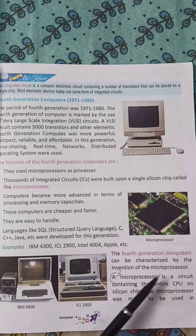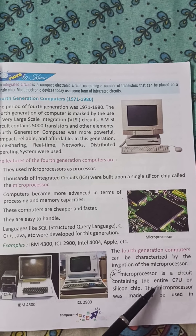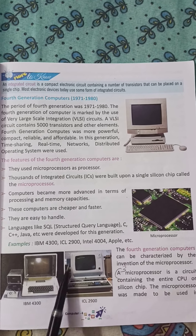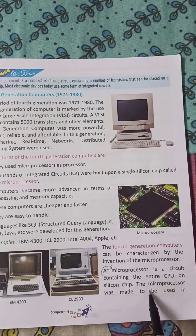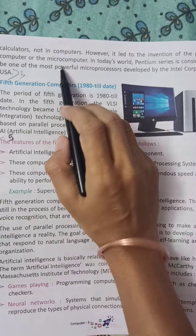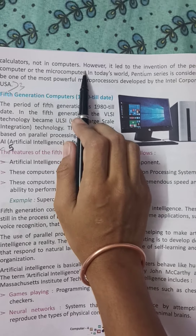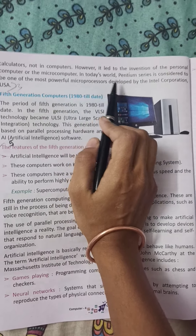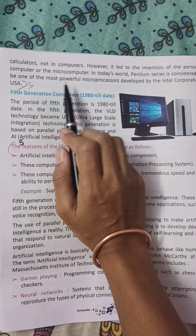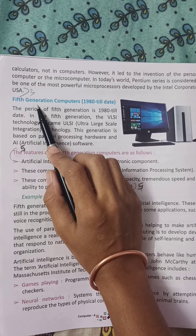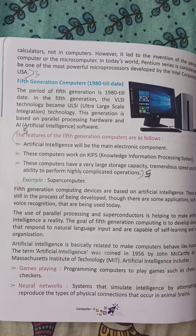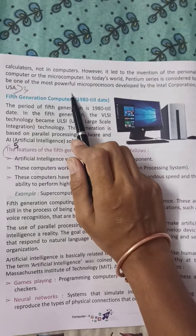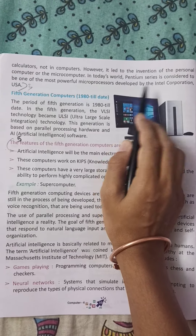The 4th generation computer was invented around the microprocessor. A microprocessor is a circuit containing the entire CPU on a silicon chip. Microprocessors were originally made to be used in calculators, not in computers. However, it led to the invention of personal computers. Today, the Pentium series, developed by Intel Corporation USA, is considered one of the most powerful microprocessors.